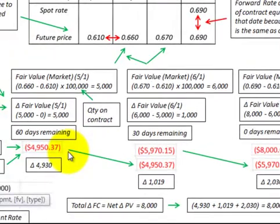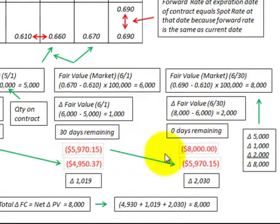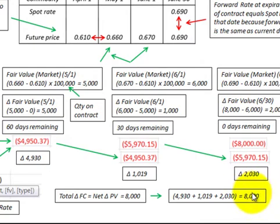To determine the cumulative amount, we subtract out the previous period's value. For May 1st, the prior amount was zero, so the change is $4,950. For June 1st, we subtract the prior $4,950 from the present value of $5,970, giving a period change of $5,919 — wait, approximately $1,020. For the last period, subtracting the June 1st present value of $5,970 from $8,000 gives a change of $2,030. Totaling all net changes — $4,950 plus approximately $1,020 plus $2,030 — equals $8,000, the total change from contract start to end.